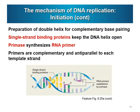The double helix is prepared for complementary base pairing. Single-stranded binding proteins keep the DNA helix open. Then primase synthesizes RNA primers that are complementary and antiparallel to each template strand — because the process always goes 5' to 3'. One strand runs 5' to 3' and the complementary strand runs 3' to 5', making them antiparallel.